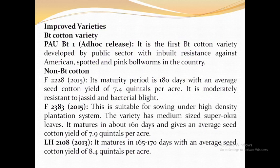Regarding improved varieties, first is Bt cotton PAU Bt1. It is the first Bt cotton variety to be developed by any public sector institution, with inbuilt resistance against American bollworm and pink bollworm in the country.